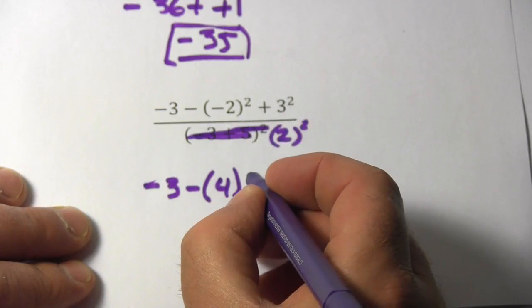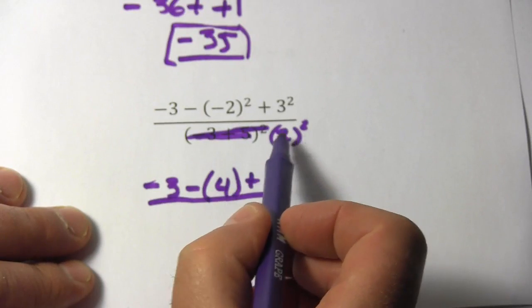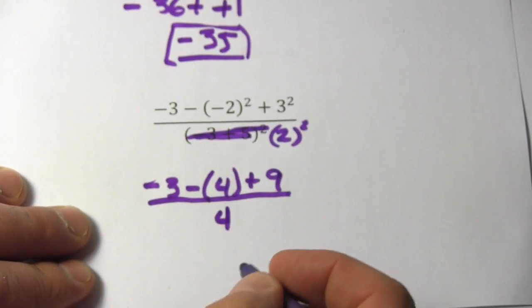Then we have plus 3 squared, well that's 9, and then on the bottom 2 squared, that's 4.